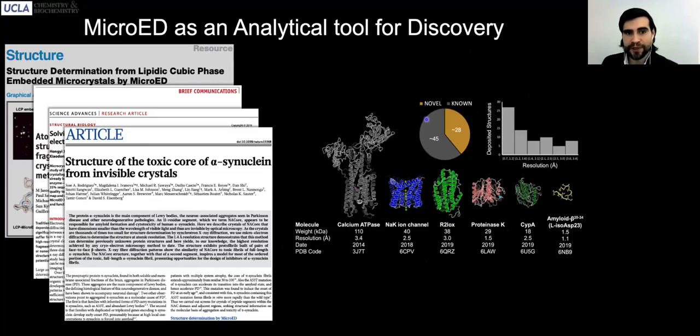A compendium of the structures is shown here. Many of these structures are determined for the purpose of improving the method and are previously known. A growing number are entirely novel. These are new structures that were never determined previously and have now been elucidated by this method, most at atomic resolution. We can see where all of the atoms are in these molecules.